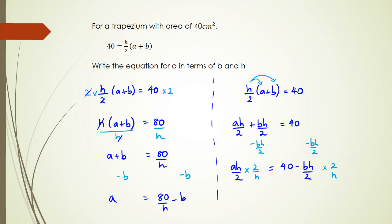Just remember it's 40 minus bh over 2, the whole thing multiplied by 2 over h. You might wonder why I multiplied by 2 over h. Check this out: h and h cancels, 2 and 2 cancels, and I'm left over with a on this side, and then here I've got 2 over h multiplied by 40 minus bh over 2.